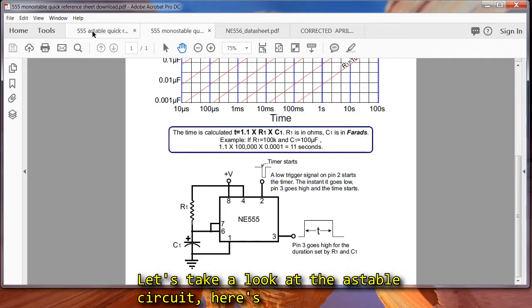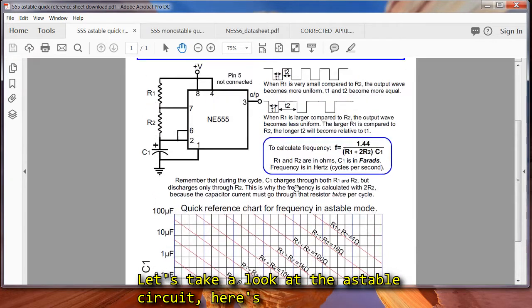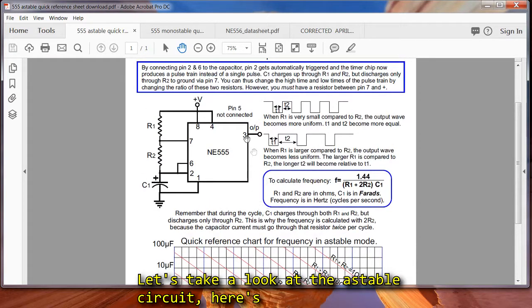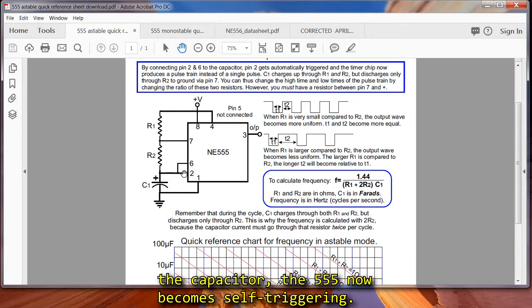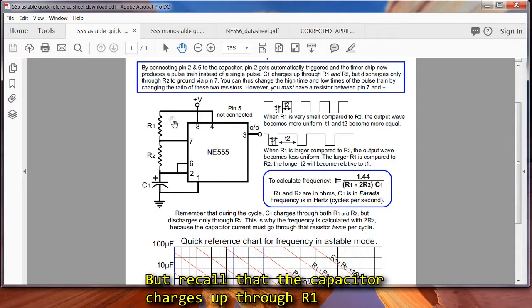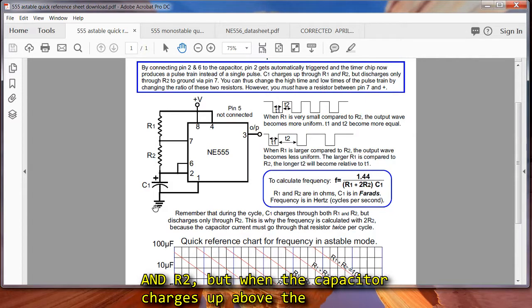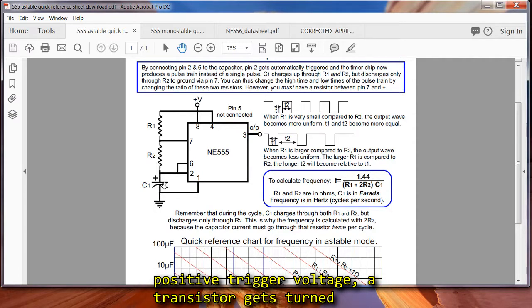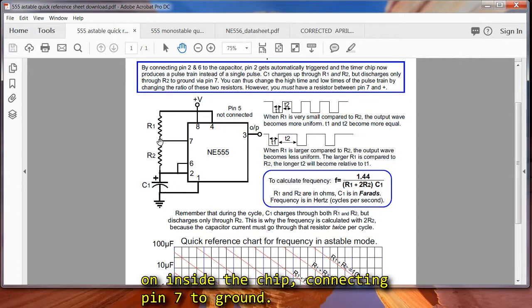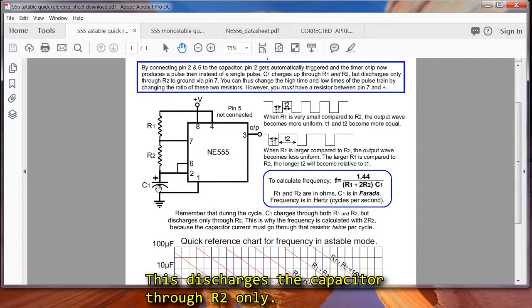Let's take a look at the astable circuit. Here's the schematic. By tying pin 2 and 6 to the positive side of the capacitor, the 555 now becomes self-triggering. But recall that the capacitor charges up through R1 and R2, but when the capacitor charges up above the positive trigger voltage, a transistor gets turned on inside the chip, connecting pin 7 to ground. This discharges the capacitor through R2 only.